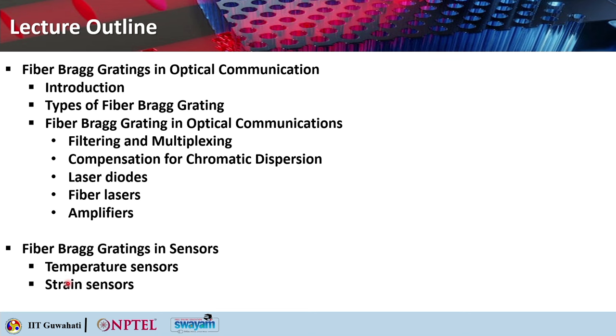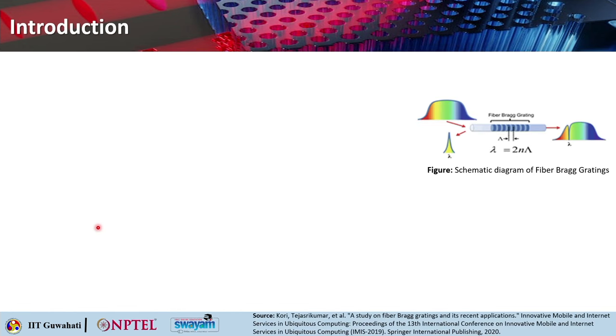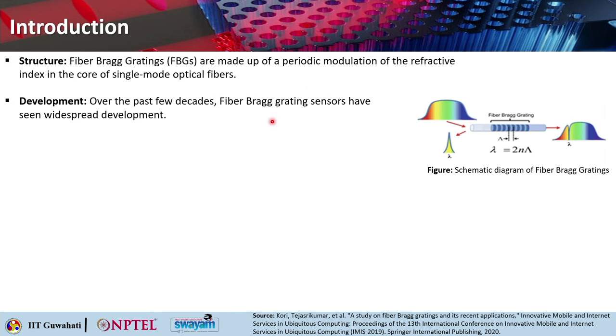We will also discuss applications of fiber Bragg gratings as temperature and strain sensors. Fiber Bragg grating is a very important component in optical communication, which is the backbone of all high-speed data transmission in today's world. It is essentially a 1D periodic grating — a 1D photonic crystal — made of periodic modulation of the refractive index inside the core of a single-mode optical fiber.